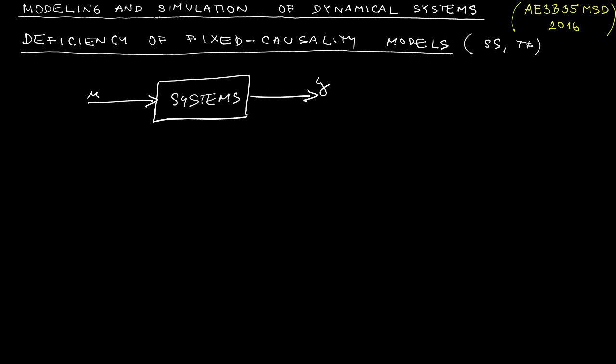Let's consider the block diagram over here. What we mean by this is that the input signal is transformed by the system into the output signal. That's why we call these models like state-space or transfer functions signal-based models.